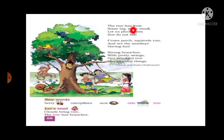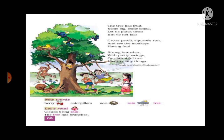Now look — what other things are there on the tree? 'The tree has fruit' — on the tree there are fruits too, some big some small. 'Let us pluck them but do not fall.' So what the poet says is the tree has fruits, some are big and some are small, and we should not fall down from the tree.